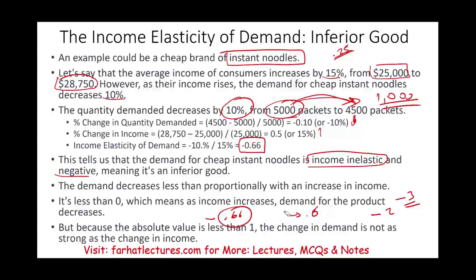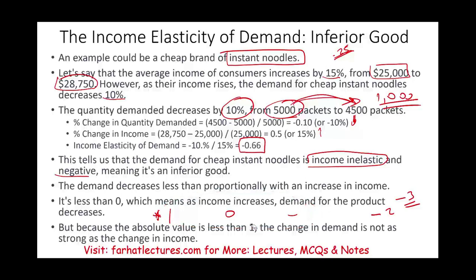So anything between negative 1 and positive 1 means there will be a change, but the directional effect is not strong. Anything above 1 or below negative 1 means the change will be relatively strong.